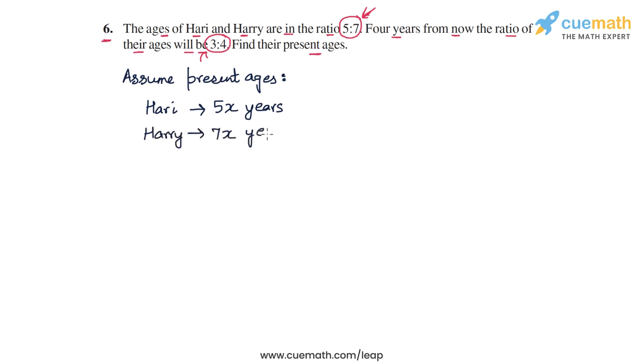And why have we assumed it this way? Well because the current ages are in the ratio 5 is to 7. That's why 5x and 7x. And what we have to do is find the value of x.